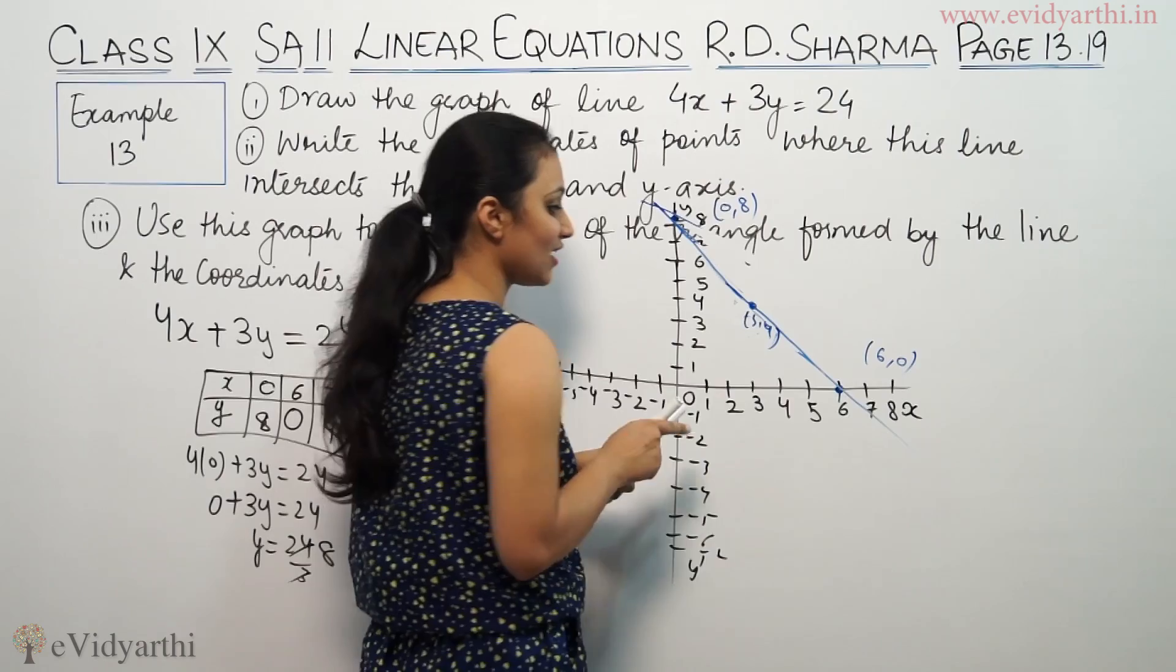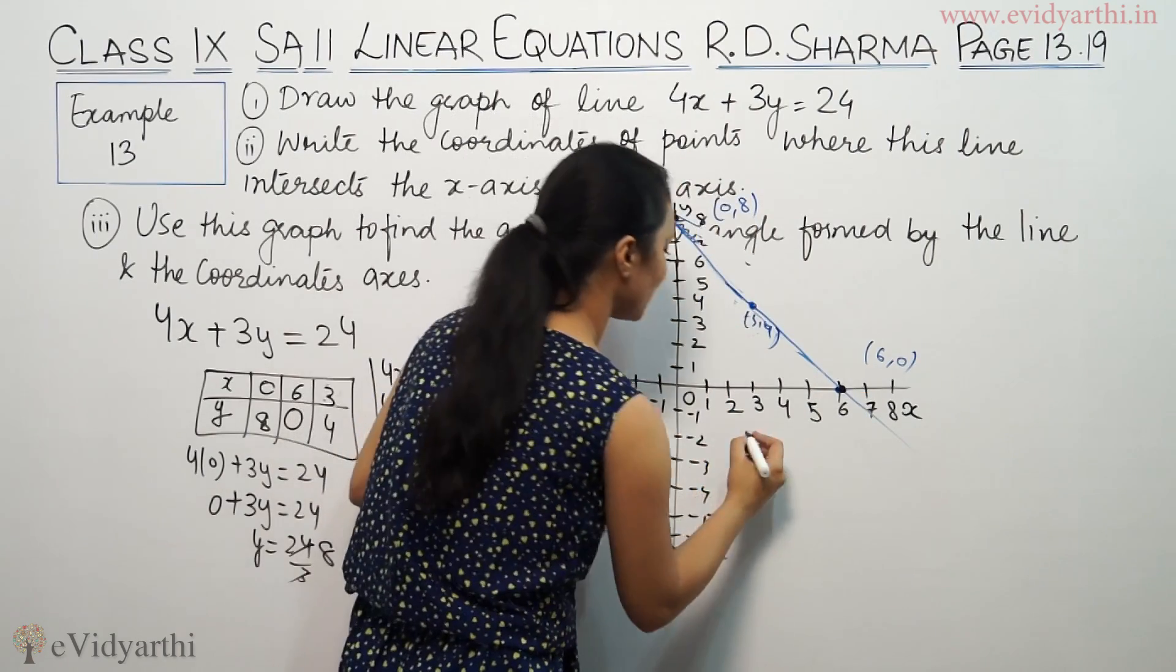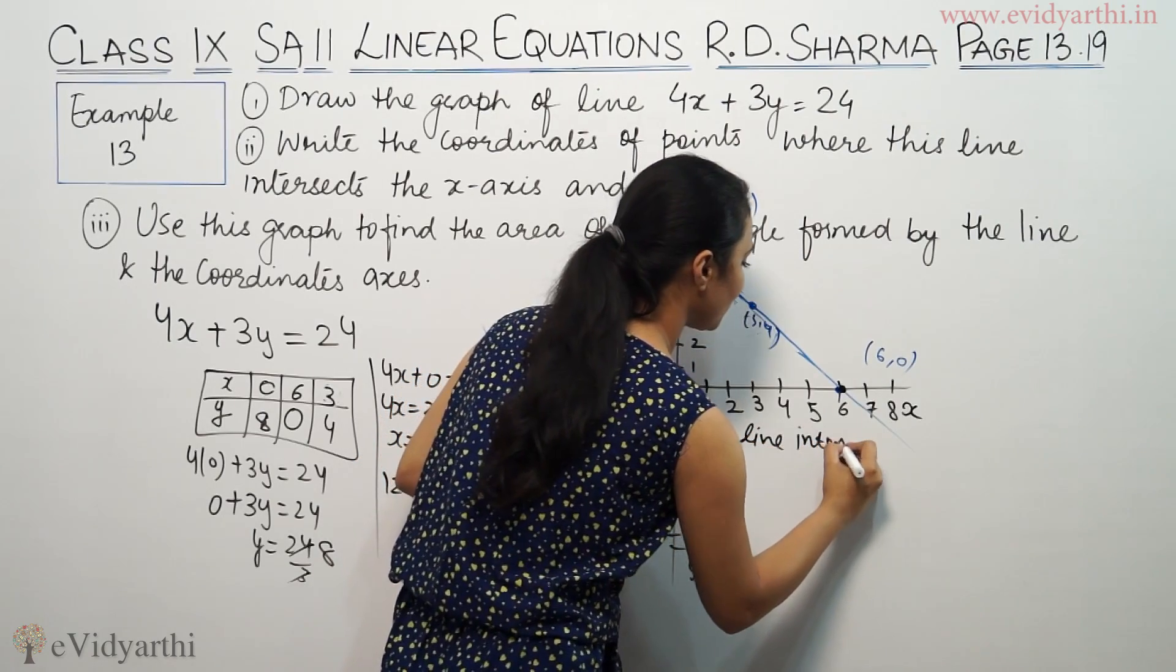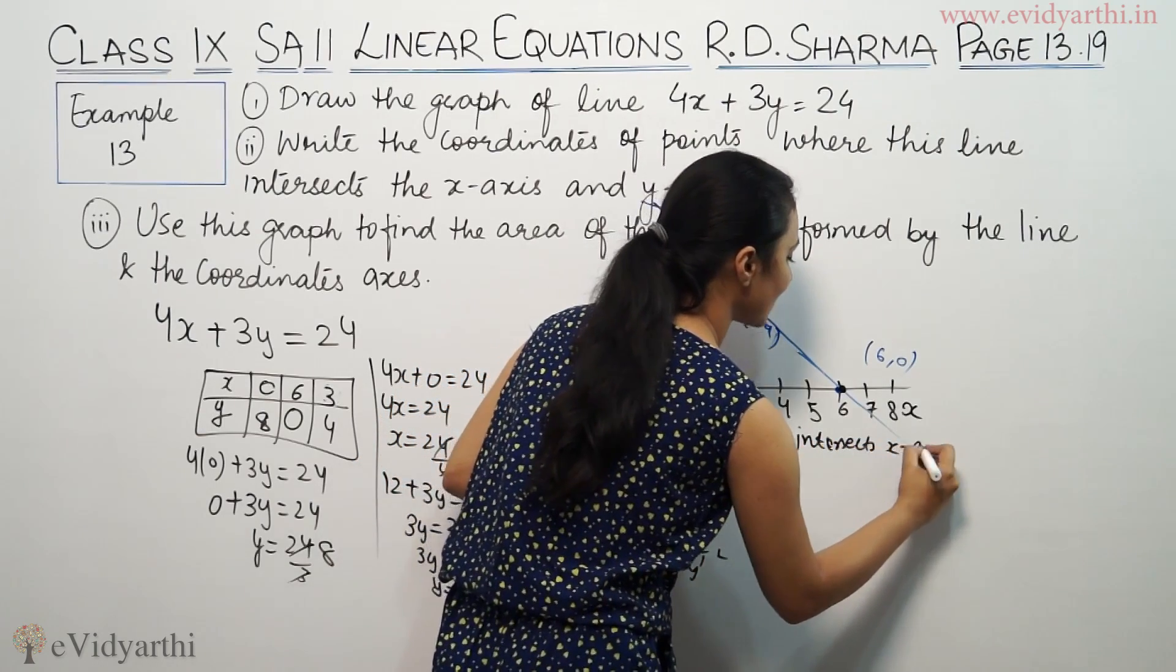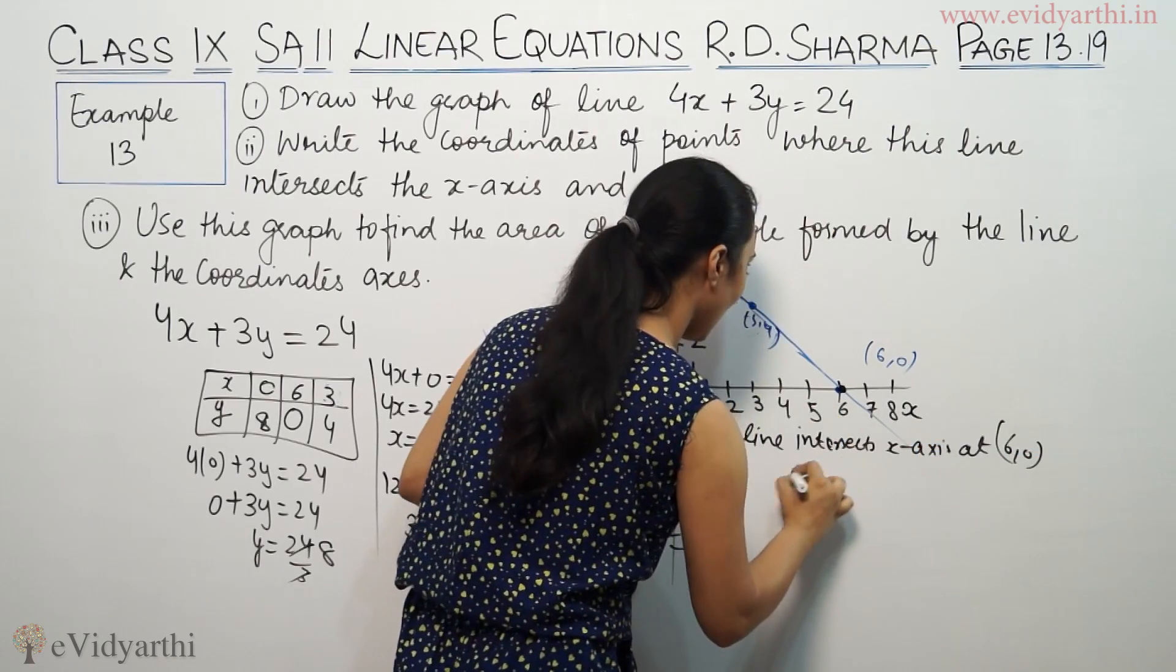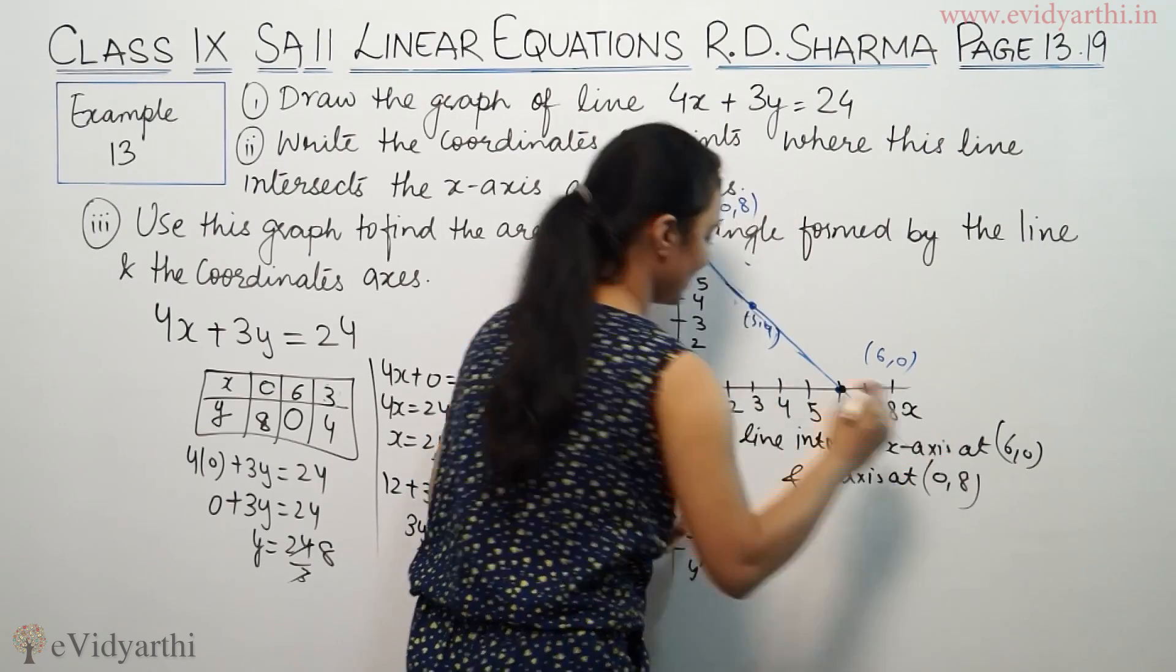Looking at the x-axis and y-axis, the line intersects the x-axis at (6,0) and the y-axis at (0,8).